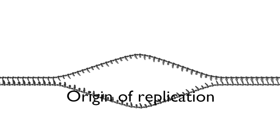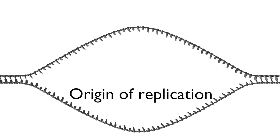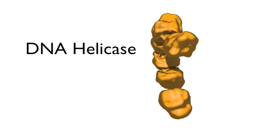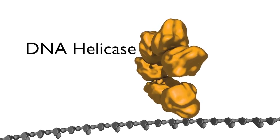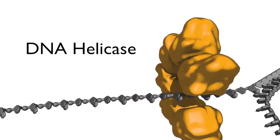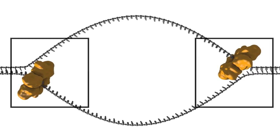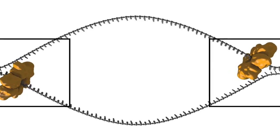This opening is regulated by a series of initiation regulatory proteins not shown here. Once open, a DNA helicase, a ring of six subunits, is loaded onto one strand of the DNA at each side of the replication bubble. This establishes two replication forks that will move away from each other as replication proceeds.